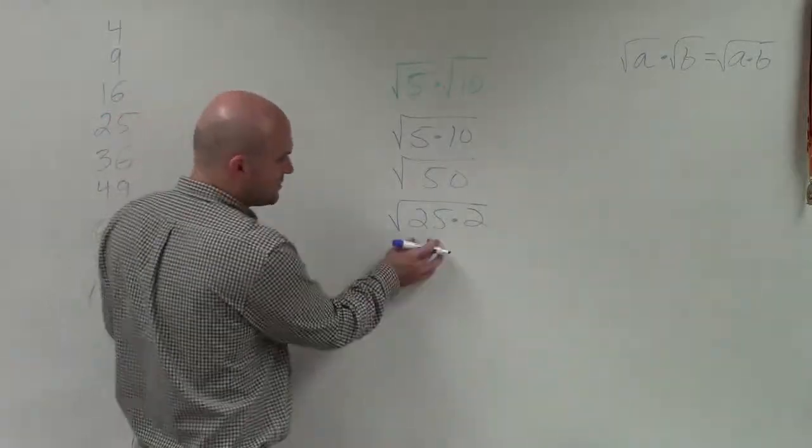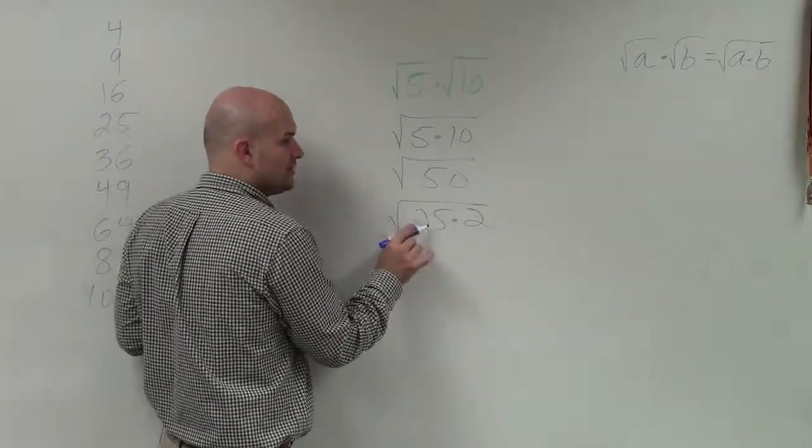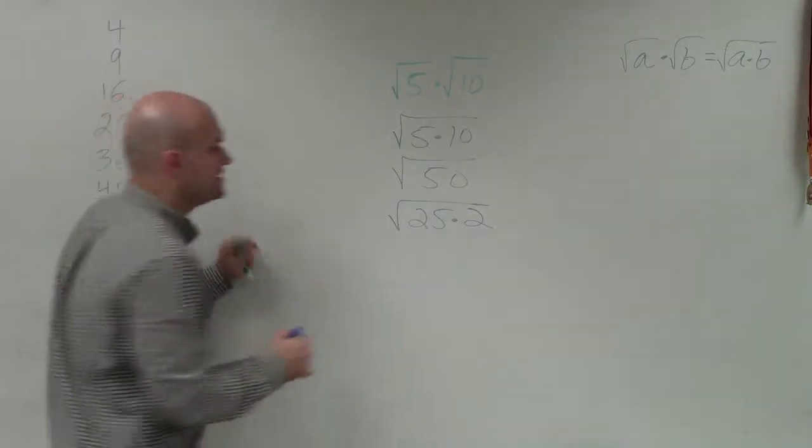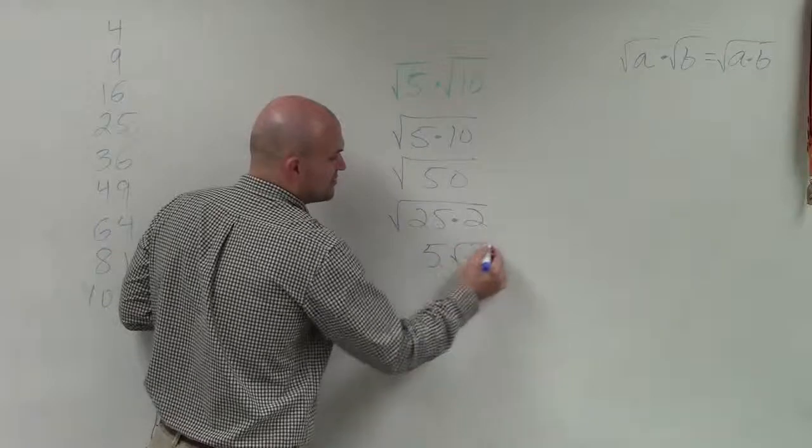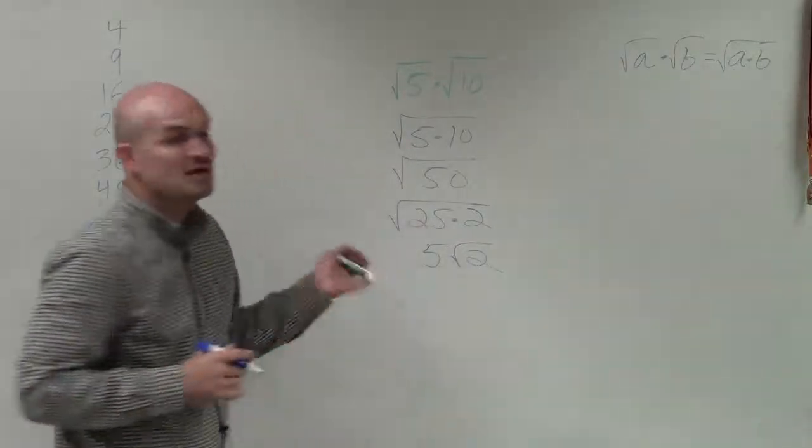But the important thing about writing it this way is now I know what the square root of 25 is. The square root of 25 is 5, because that's a perfect square number. However, I don't know the square root of 2, so I'm going to leave that as is.